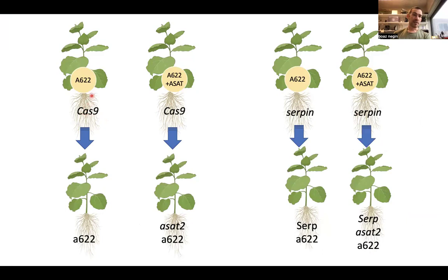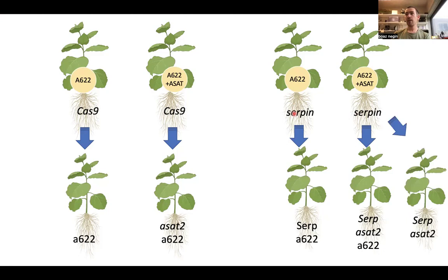I had Cas9-expressing plants, and in that background I had either the clasinid targeting only A622, or the one targeting both. You might ask why I didn't use the A622 mutants as background — because they had the wrong Cas9. This method works in Benthamiana only with a specific PCO Cas9, not just any Cas9. I also used the serpene mutant background, which had the proper Cas9, and used both clasinids in that background to give serpene-nicotine and triple mutants. I was hoping that plants not mutated in A622 would be mutated in the acyl sugar genes, giving me the other double.